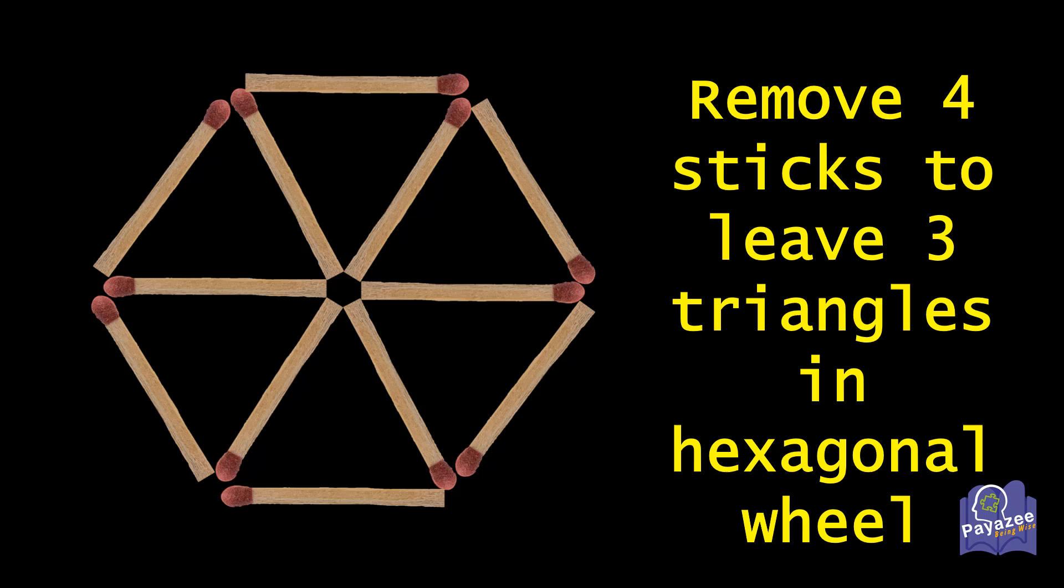Let's try to make 3 independent triangles. We will remove this, this, and this stick from this hexagon to make 3 triangles. Now this gives us 9 sticks with 3 triangles. But that's not our question and the correct solution.